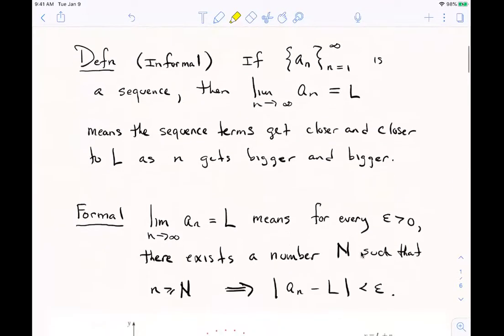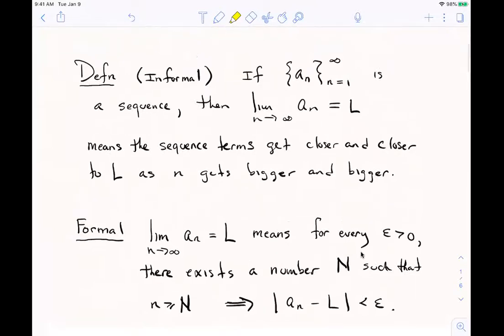I've got an informal and a formal definition of limit here for us. The informal one we've already used. I'm given some sequence a sub n, n goes from one to infinity. What do I mean when I write that the limit as n goes to infinity of a sub n is L? I just mean that those sequence terms, those a sub n's are going to become closer and closer to that number L, the bigger and bigger n gets.